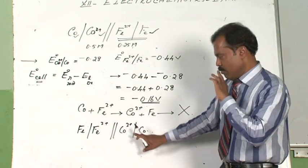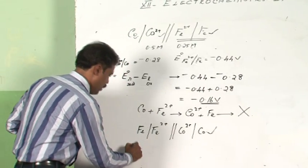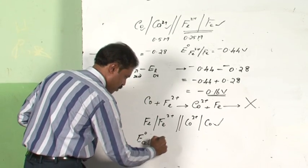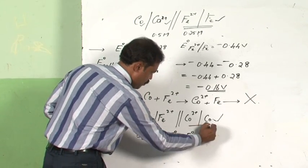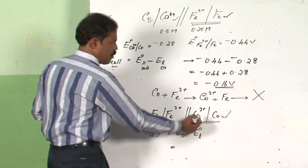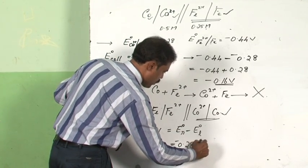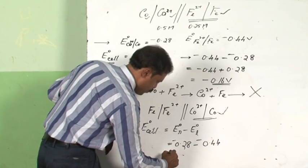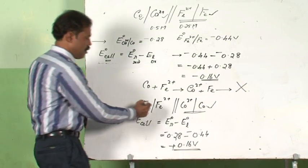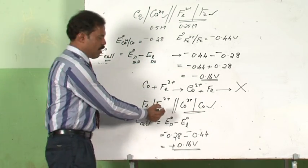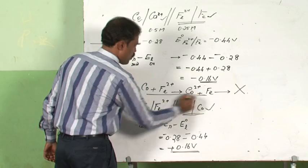Now if you calculate E⁰ for this particular cell, assuming standard state, E⁰ of cell equals E⁰ of right minus E⁰ of left. Cobalt is getting reduced on the right, so the value is −0.28 minus −0.44, which comes out to be +0.16 volt. This means this cell is operational and spontaneous. The other cell setup is non-spontaneous — that reaction is also non-spontaneous.